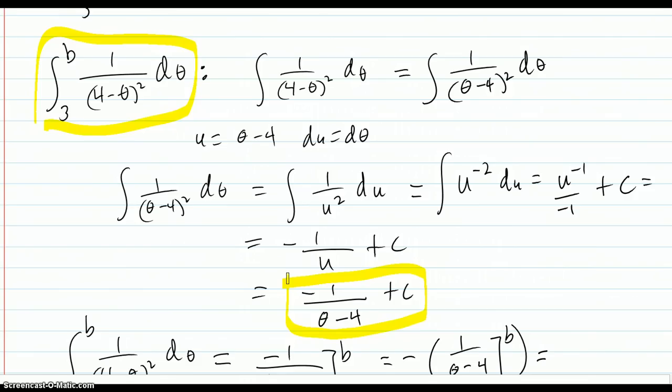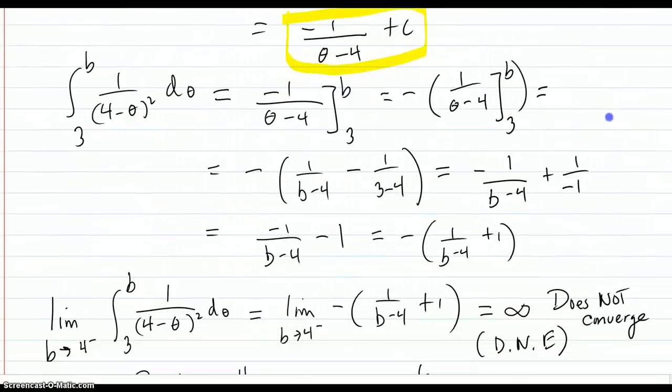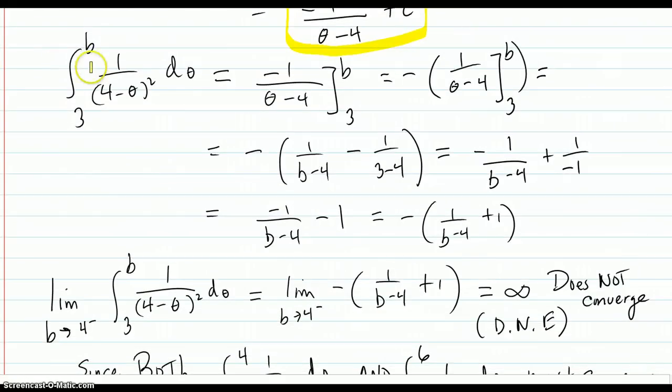And now somewhere along the line, I think I switched it around, theta minus 4 instead of 4 minus theta. That's only okay because of the even exponent, making the plus or minus be the same answer. Then we say that the integral from 3 to b is that anti-derivative evaluated at 3 to b.